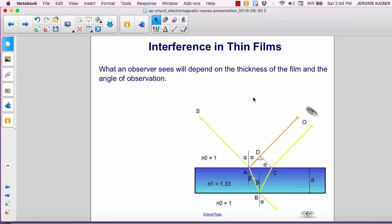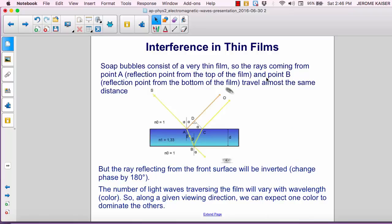What the observer sees will depend on the thickness of the film and the angle of observation. Soap bubbles consist of a very thin film, so rays coming from point A on the surface and from point B at the interface between the inner surface of the bubble and the air inside the bubble travel almost the same distance.